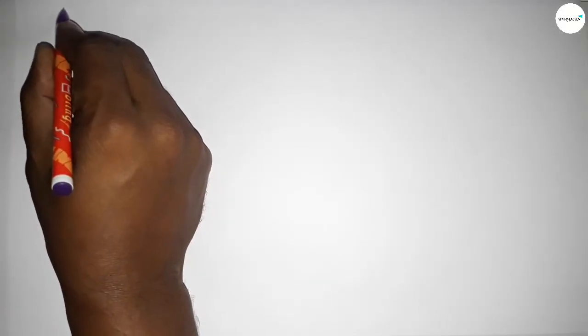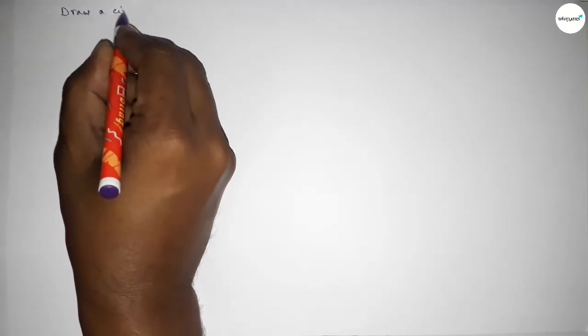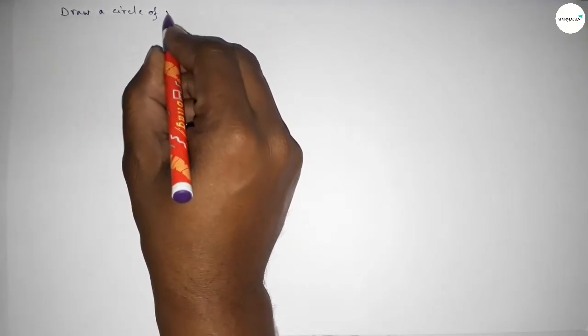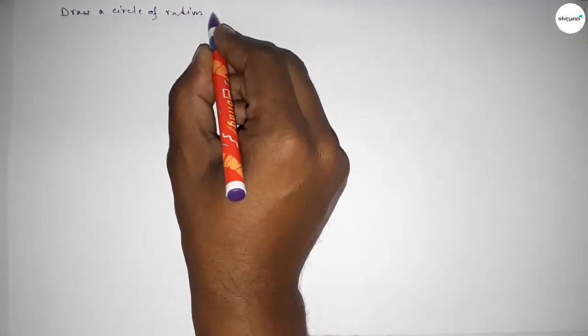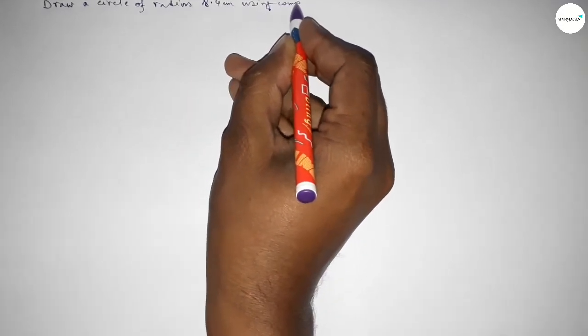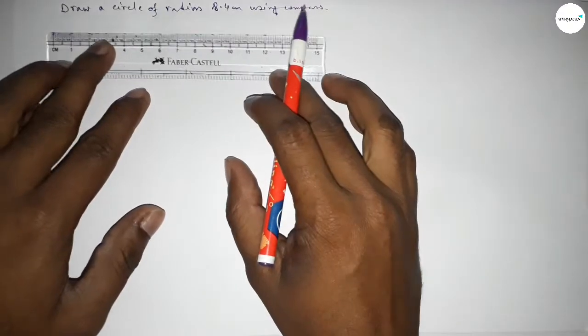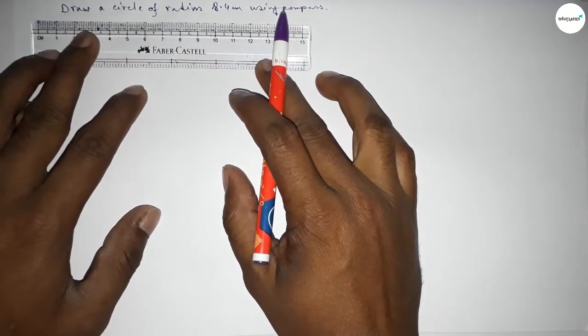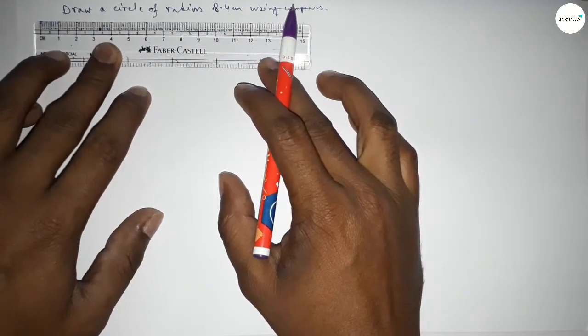Hi everyone, welcome to SI Share Classes. Today in this video, we have to draw a circle of radius 8.4 centimeters using a compass. So let's start the video. First of all, we'll be drawing the radius of 8.4 centimeters.